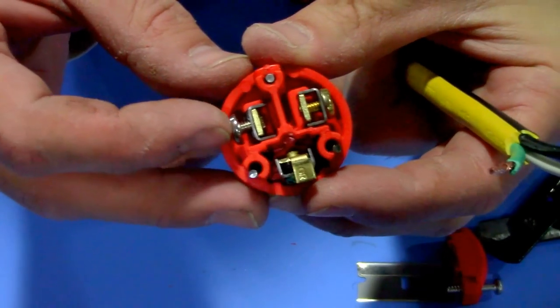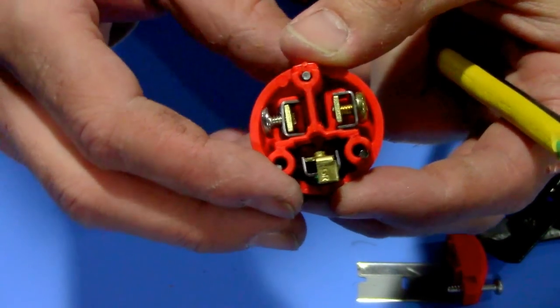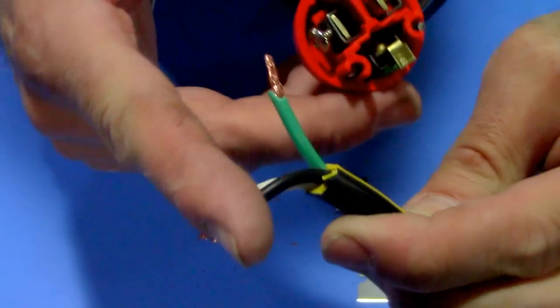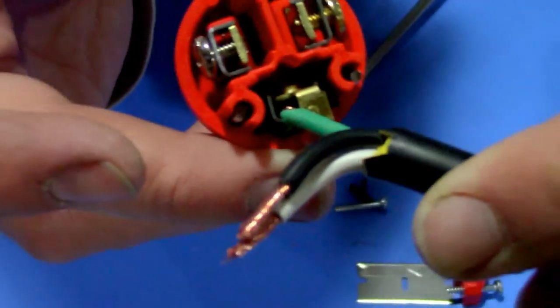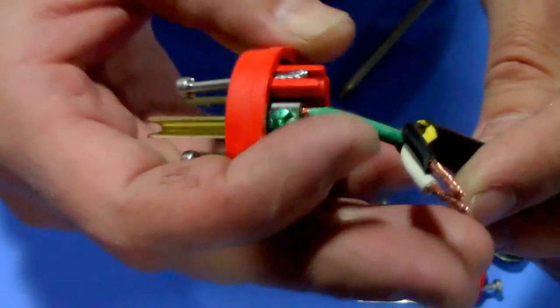We're going to clamp down the wires. You can see each screw has this U-shaped piece of metal. What you want to do is insert the wire in between the two pieces of metal like that, and then the screw just tightens it down.